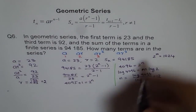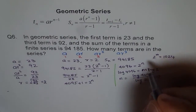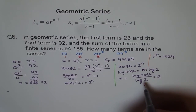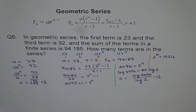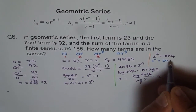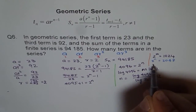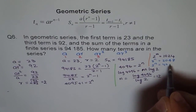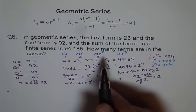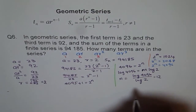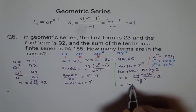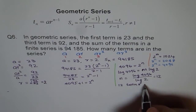We could also verify using powers of 2: 2^10 is 1,024, 2^11 is 2,048, and 2^12 is 4,096. Therefore, the answer is n equals 12 — there are 12 terms in the series.